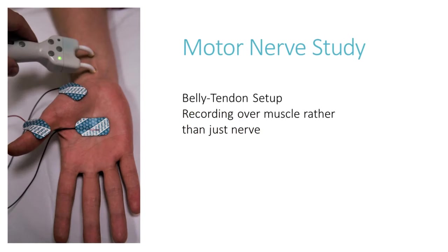Motor studies are different. We are not picking up the response from the nerve itself, but from the actual muscle. We use a belly-tendon montage setup, with the active electrode over the APB muscle and the indifferent electrode over its tendon more distally. It's important to bear in mind that we have to take into account not just the nerve impulse along the nerve, but also transmission across the neuromuscular junction and depolarization of the muscle fibers as well.